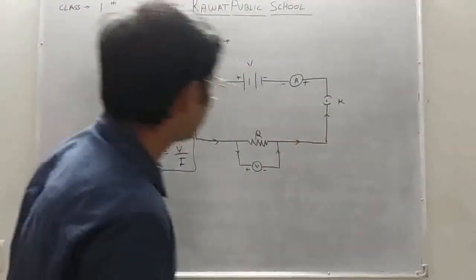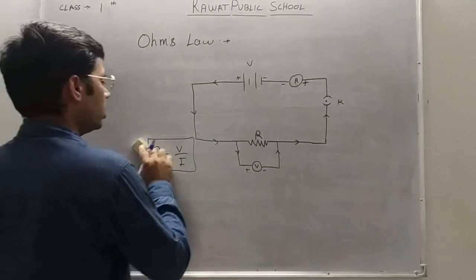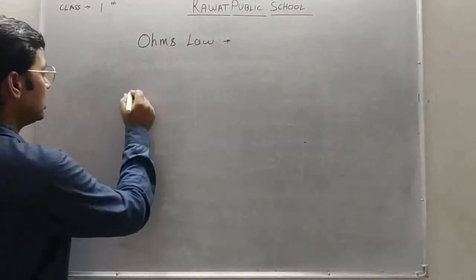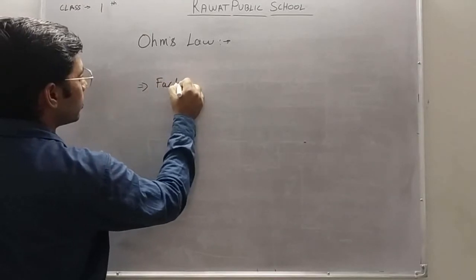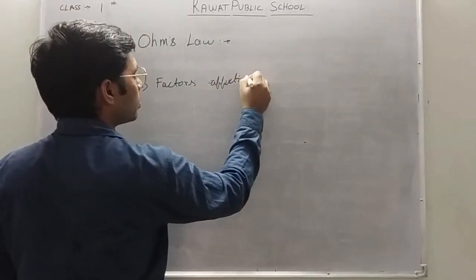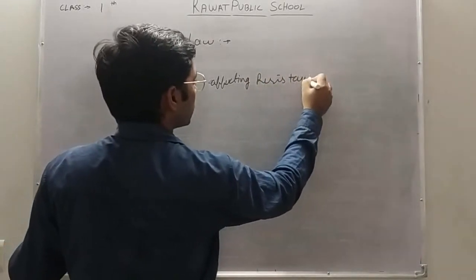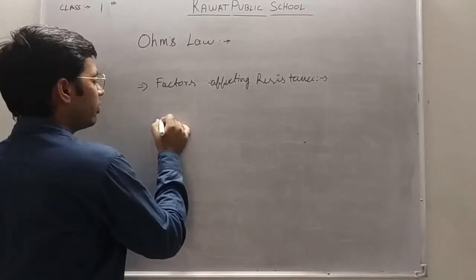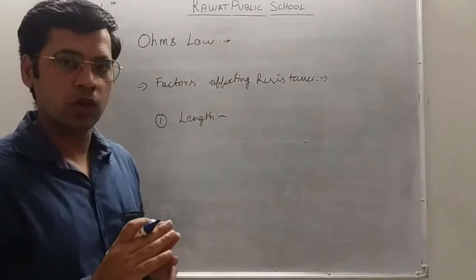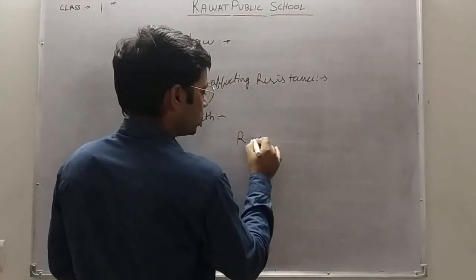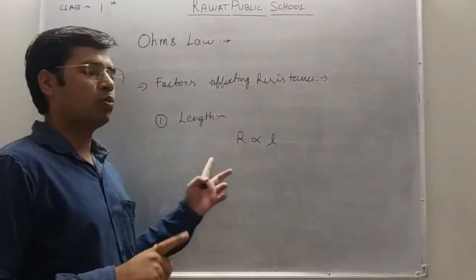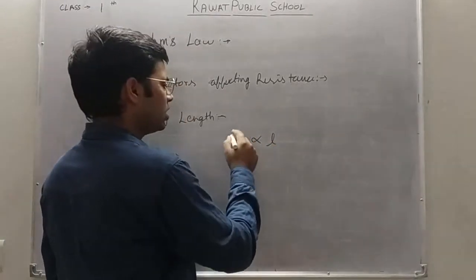Now there are various factors on which resistance depends. Let us discuss them one by one. The first factor is length. Resistance is directly proportional to length — when we increase the length, resistance also increases. Both are directly proportional to each other, so when length changes, resistance also changes.